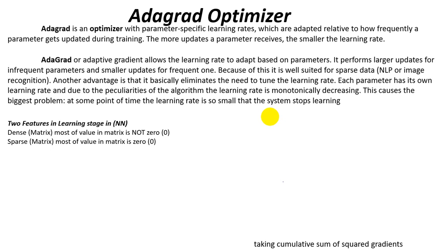In the previous session we discussed gradient descent with momentum and mini-batch. We also covered the concept of momentum and fast training strategies. In that session we discussed the optimizer's definition. Moving onward, we will see different optimizers most frequently used in deep learning and neural networks. At this time we are going to study the adaptive gradient optimizer, known as Adagrad.